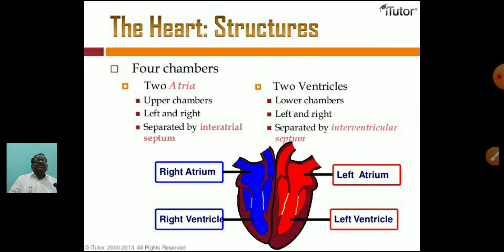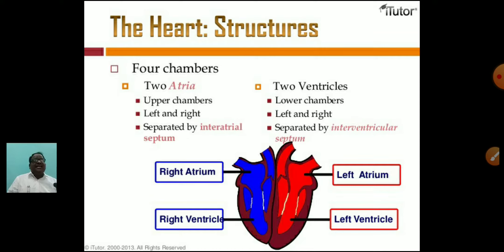These septa have apertures. The apertures are located at the left and right auriculo-ventricular septa, and each aperture is covered by valves. Generally, the left atrium is smaller than the right atrium, and the left ventricle is larger than the right ventricle.